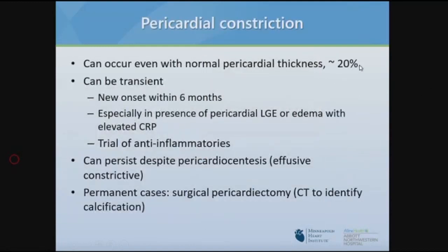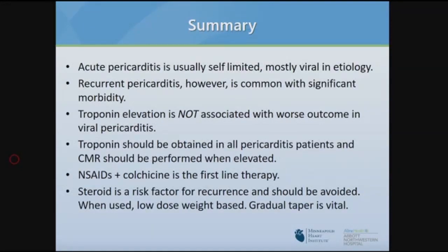Constriction can occur even with normal pericardial thickness. Transient constriction is usually defined as new onset within six months, especially with elevated CRP and delay enhancement on MR or edema on T2-weighted imaging. A trial of anti-inflammatories is important before proceeding to pericardiectomy. Constriction can persist in patients with large pericardial effusion — effusive-constrictive pericarditis. In permanent cases, surgical pericardiectomy is the solution, and CT should be performed to look for calcification.